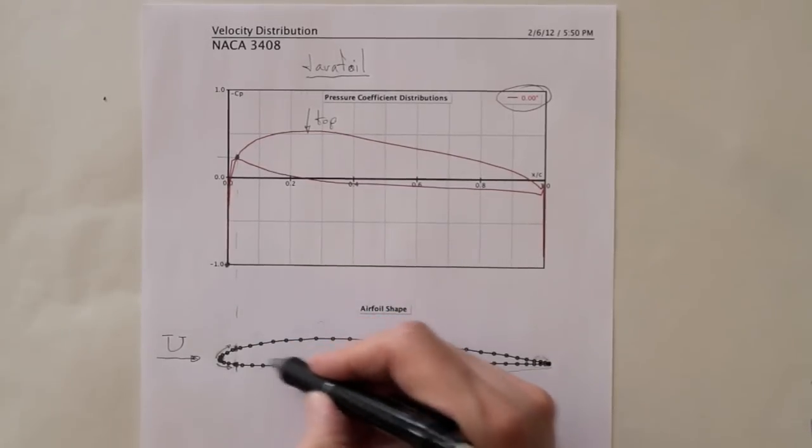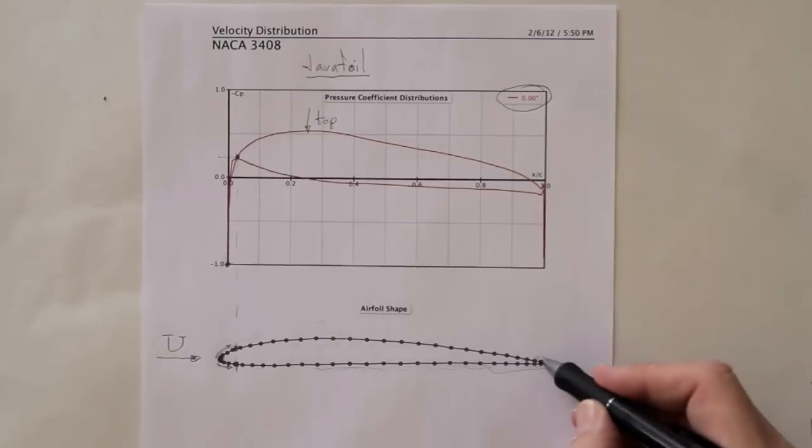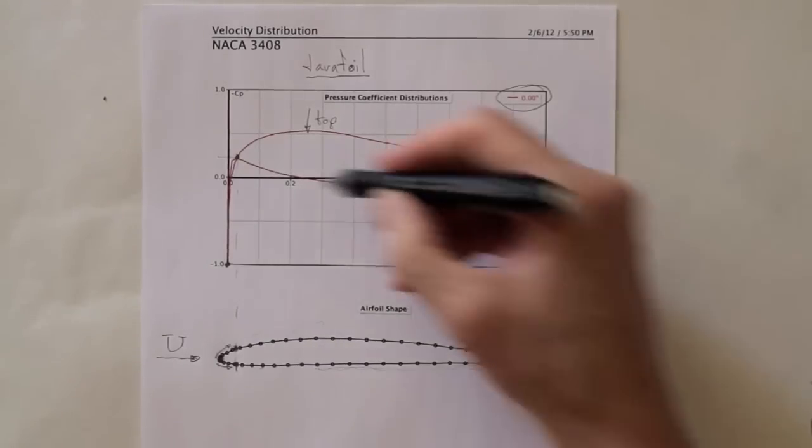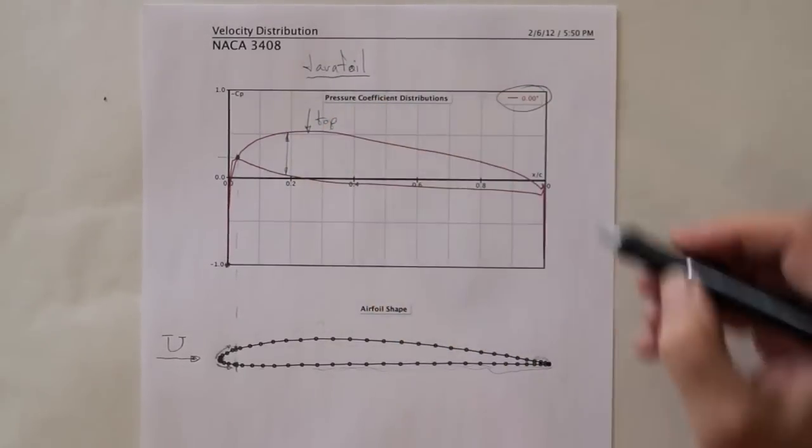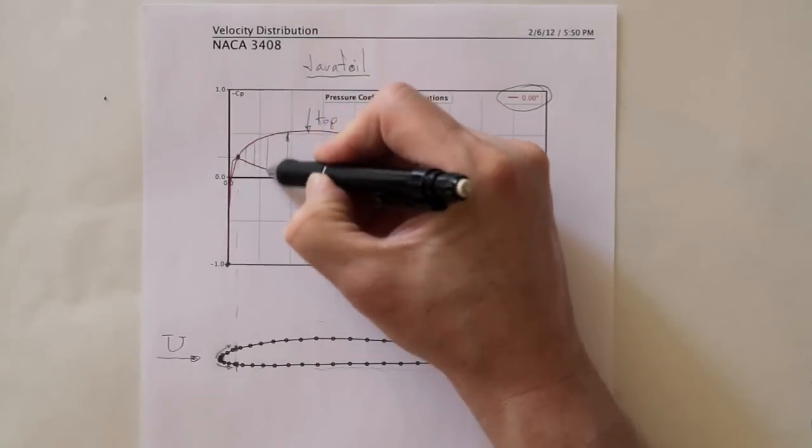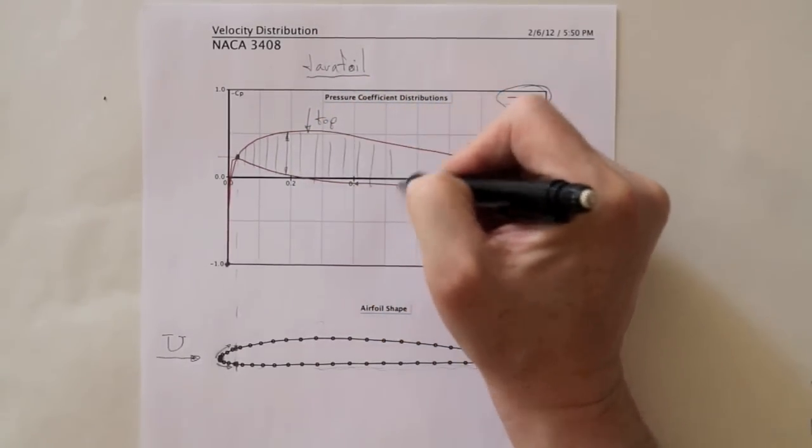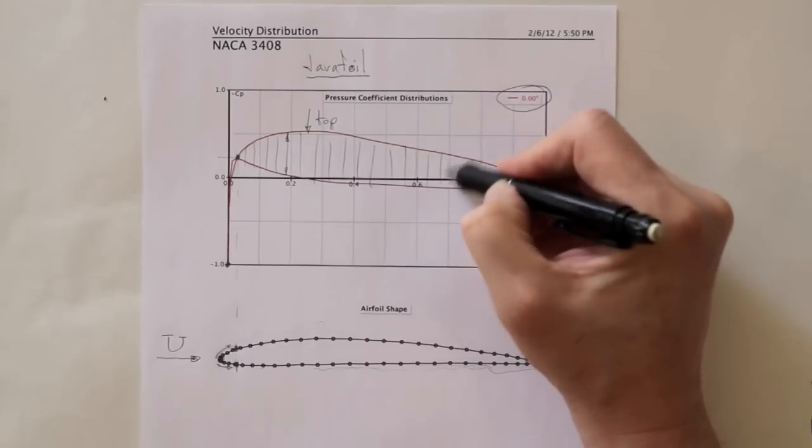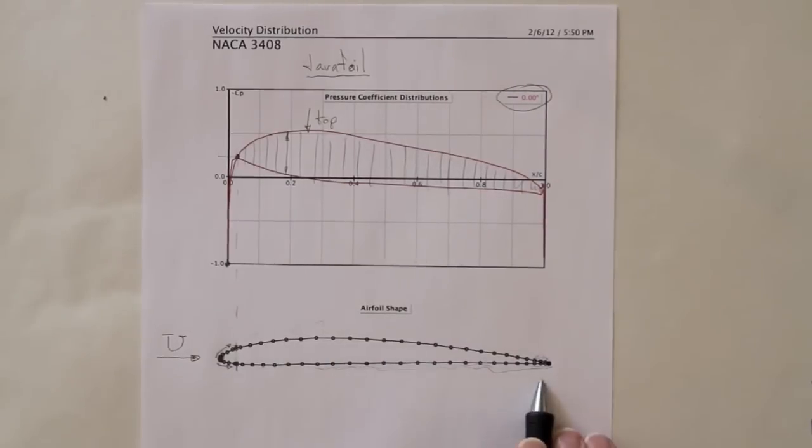So the lift generated depends on the difference between the pressure on the bottom and the pressure on the top. That's this difference here. So if we wanted the total force of the wing in lift, we'd have to integrate that area on the curve over the area of the wing.